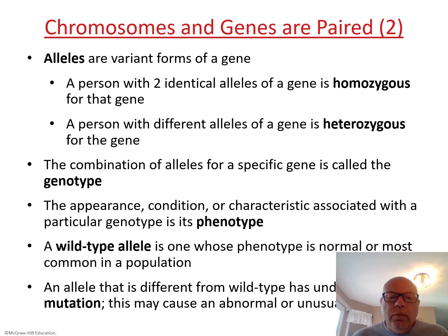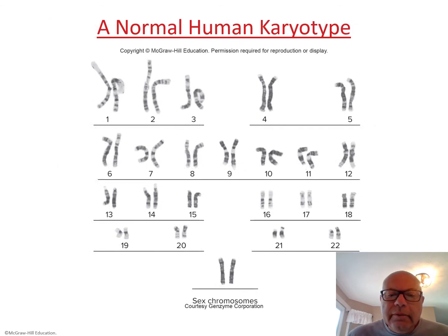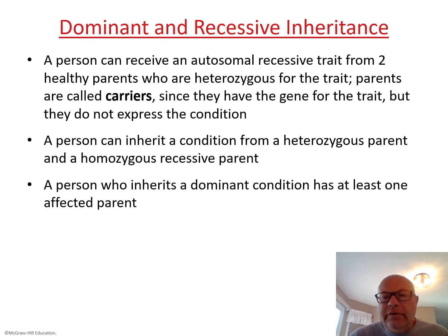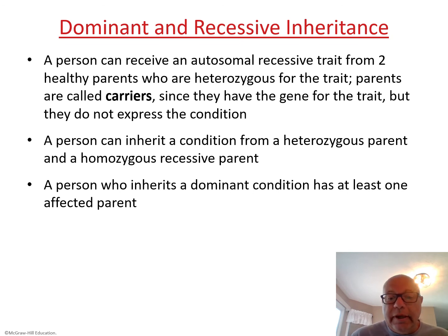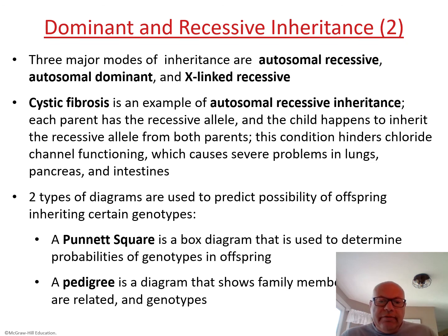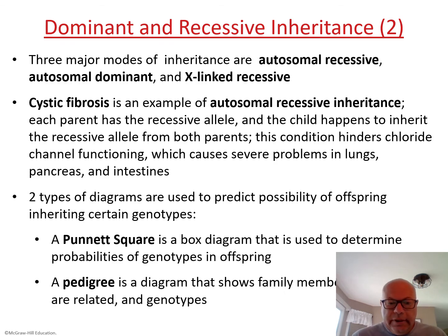A karyotype shows what the chromosomes look like. There are different modes of inheritance: there is dominant, recessive, sex-linked, and others. Sometimes parents are carriers, meaning they don't show the disease but can pass it on. One example is cystic fibrosis, which is an autosomal trait — not carried on the X chromosome. X-linked recessive traits include hemophilia, color blindness, and Duchenne muscular dystrophy.